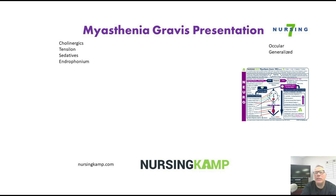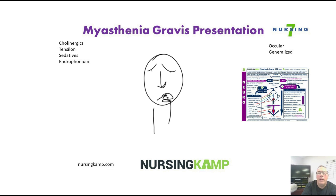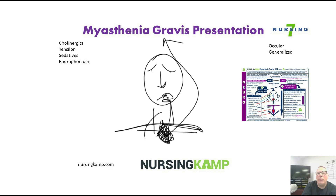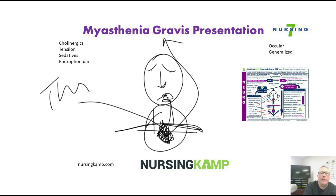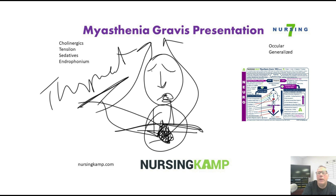Another thing about Myasthenia Gravis presentation — we worry about the respiratory. Looking at ptosis and descending weakness, when they start to have difficulty swallowing, sometimes the underlying cause could be the thymus. There's something about the thymus where people with tumors have a risk for Myasthenia Gravis. What they'll tend to do with these patients is a thymectomy — taking out the thymus — because they found the thymus might cause the problem.